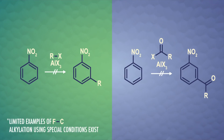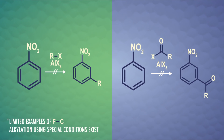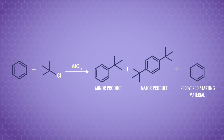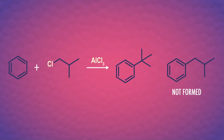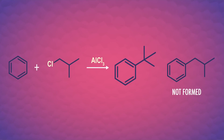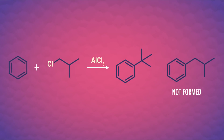We also learned that Friedel-Crafts reactions have three main limitations. First, both of them don't work so well on rings with powerful electron-withdrawing groups, like nitrobenzene. Second, the Friedel-Crafts alkylation reaction can lead to over-alkylated products. And third, those alkylation products can rearrange if a more stable carbocation intermediate can form.